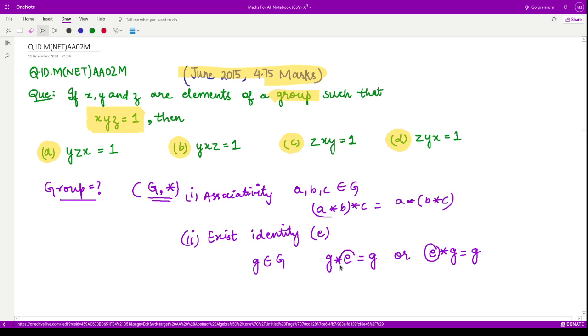The third property is existence of inverses. This says that if you take any element g belonging to G, then g star something, that something we call g inverse, should give you identity back. That means when you apply this operator on two elements and you obtain e, in that case we say one is inverse of the other. Or we can also say g inverse star g equals e. These are the properties.